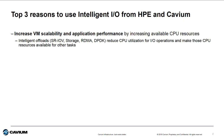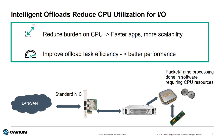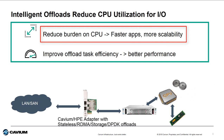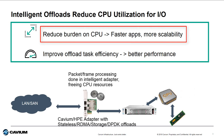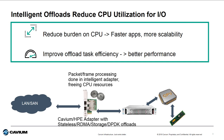First, Intelligent adapters offload work from the processor, freeing up the CPU cycles to use for running applications or adding additional virtual machines. All HPE Ethernet adapters based on Cavium technology utilize a variety of offloads to reduce the burden on the host CPU. By offloading the work from the CPU to the adapter, server architects can use the freed up CPU resources to increase VM density and server scalability without impacting the overall performance.